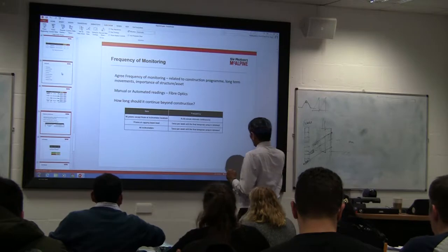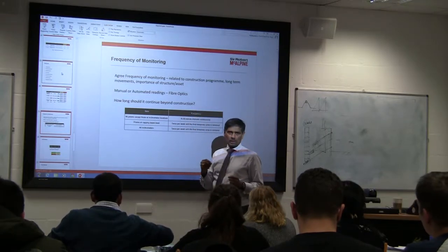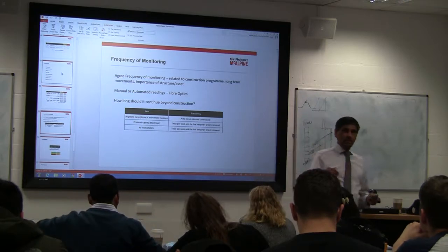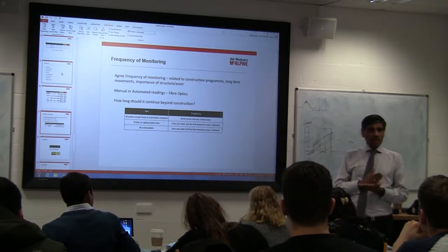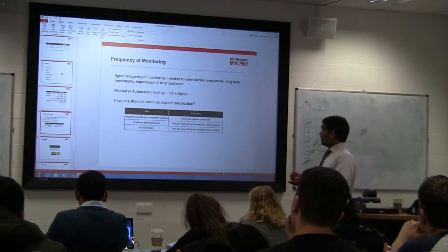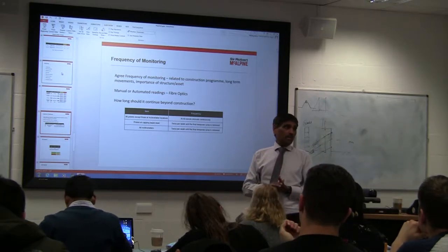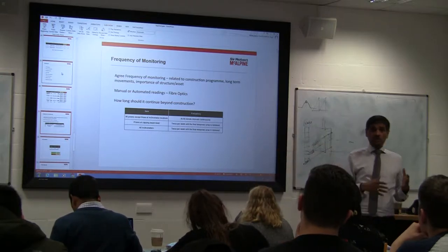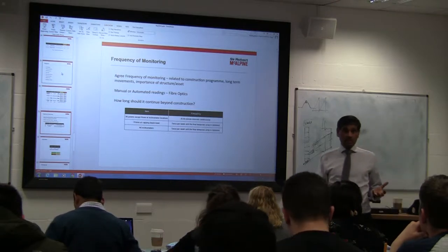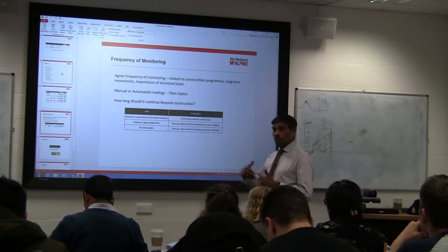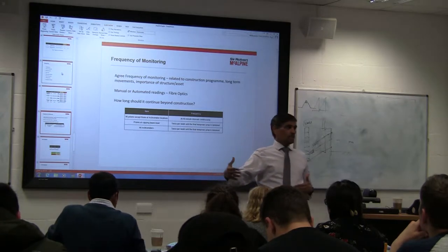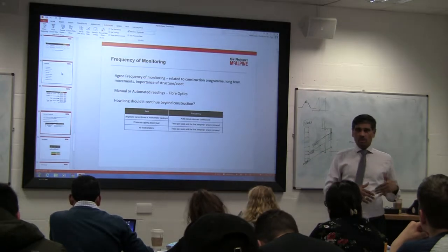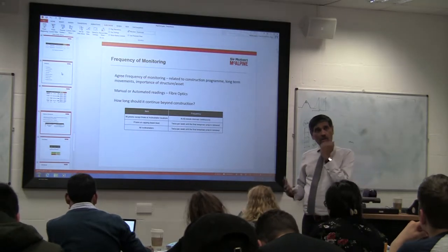Another important thing is how long after construction monitoring should continue. Remember, contractors or designers in design-and-build jobs have liability that is still ongoing after the construction period — what we call defect liability. The defect liability period varies from project to project: it could be 2 years, 5 years, or 10 years, depending on what is within the contract. You have to ensure you have enough monitoring because somewhere down the line things might change, and you need your monitoring records to protect yourself.